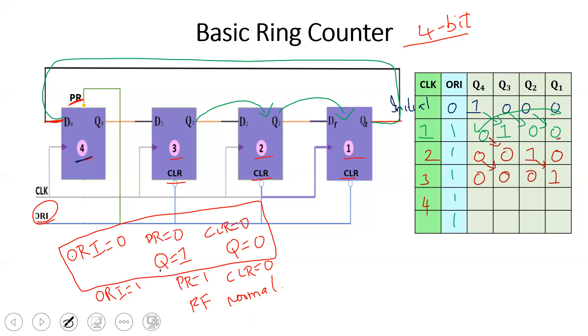Next clock pulse again. Q4 and Q3 are 0, Q2 is 0, Q1 is 0. Then Q1 again holds the shifted value. Here is Q4. On the fifth clock pulse, the pattern repeats.